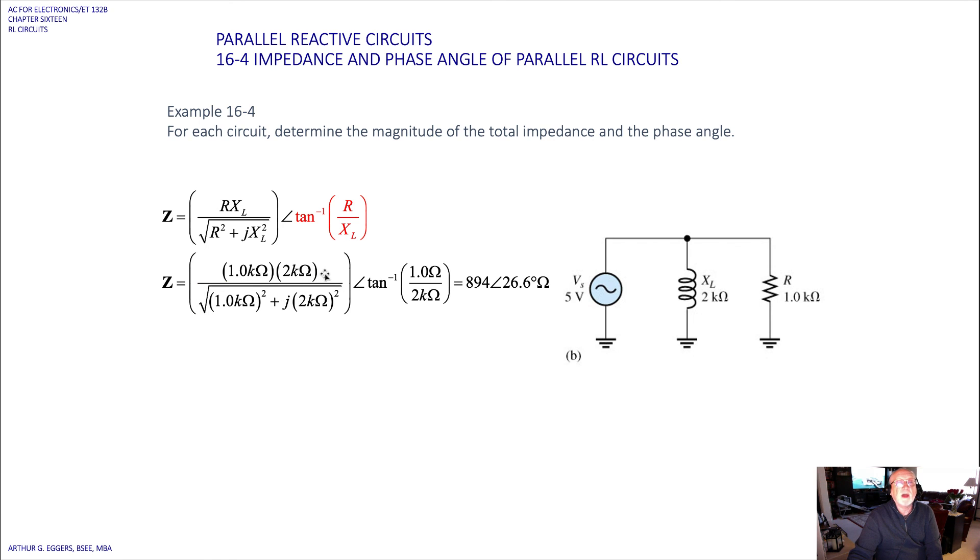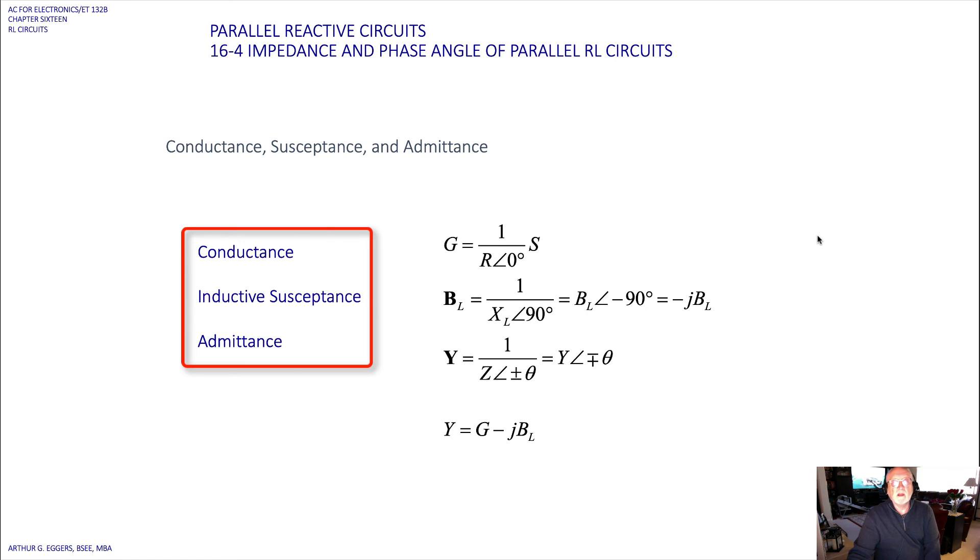When you do that, when you get the value for the denominator, do an inverse. Now, you've got a product of one term, two terms, and whatever the denominator value was inverted. Okay, and then do your inverse tangent.